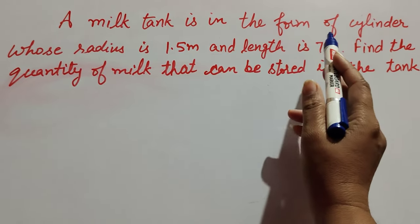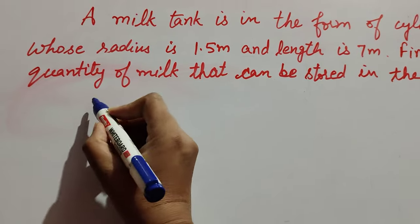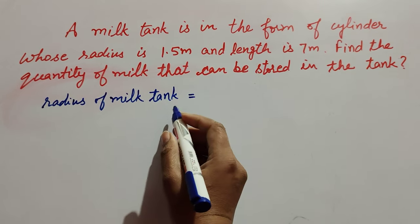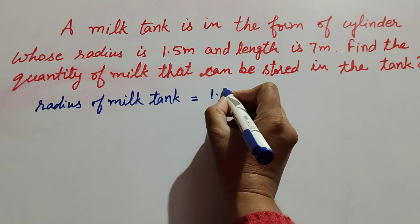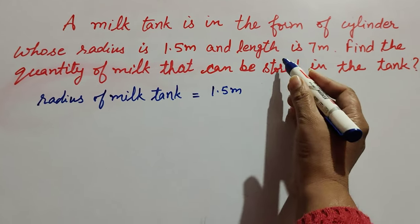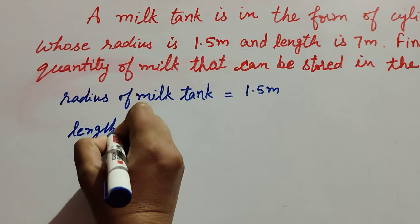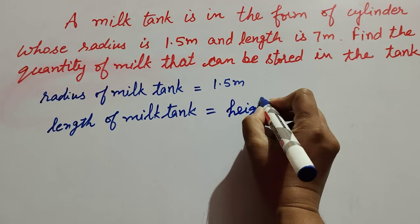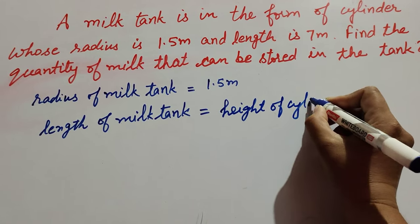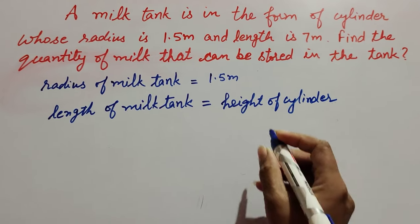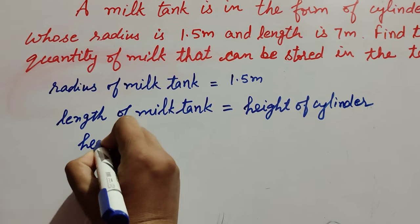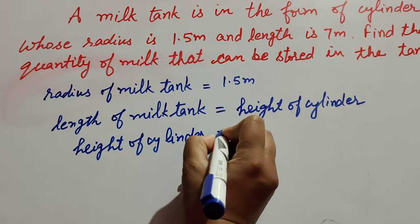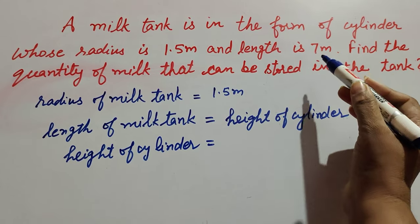Given: the milk tank is in the form of a cylinder. Radius of milk tank is equal to 1.5 meter. The length of the milk tank is equal to the height of the cylinder, so height of cylinder is equal to 7 meter.